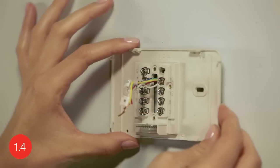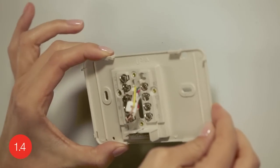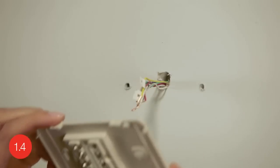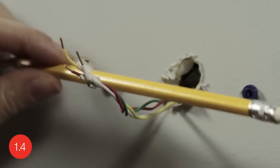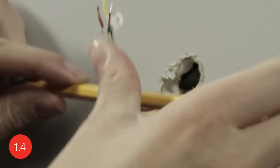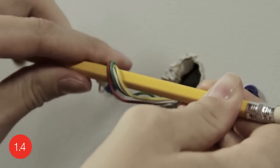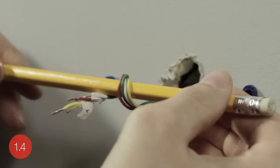When removing it, take care to ensure none of the wire labels fall off and that none of the wires fall through the wall opening. Here's a helpful hint: wrapping the wires around a pencil can prevent them from falling back through the wall after removing your old wall plate.